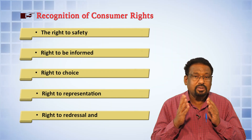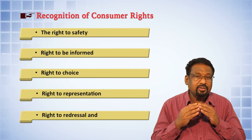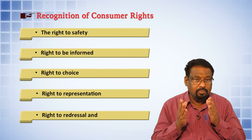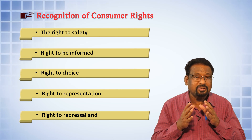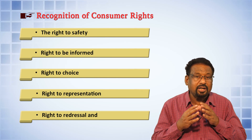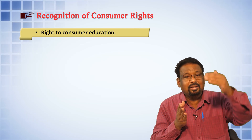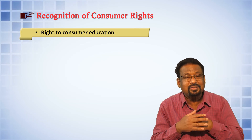Those are the general remedies available under the Consumer Protection Act. Now, the rights of consumers — we have six rights: the right to safety, the right to be informed, the right to choice, the right to representation, the right to redressal, and the right to consumer education.